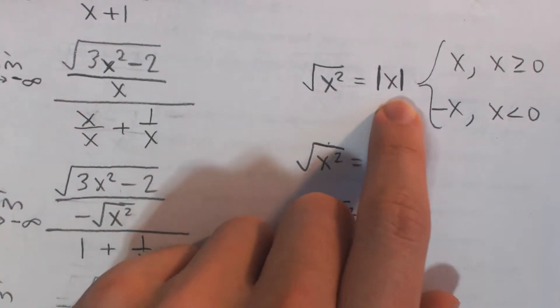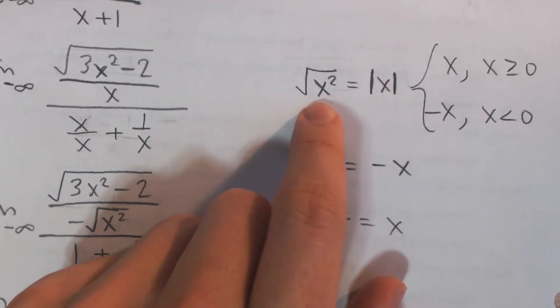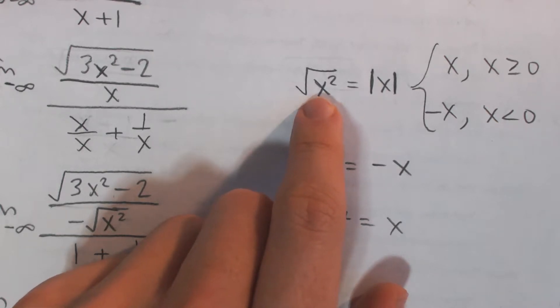The square root of x squared is absolute value of x, because if I plug in a negative number, right, when I square it, it becomes positive. And then take the square root, it's going to become the positive version, right? For example, negative 3. Plug that in. I'm going to get negative 3 squared is 9.